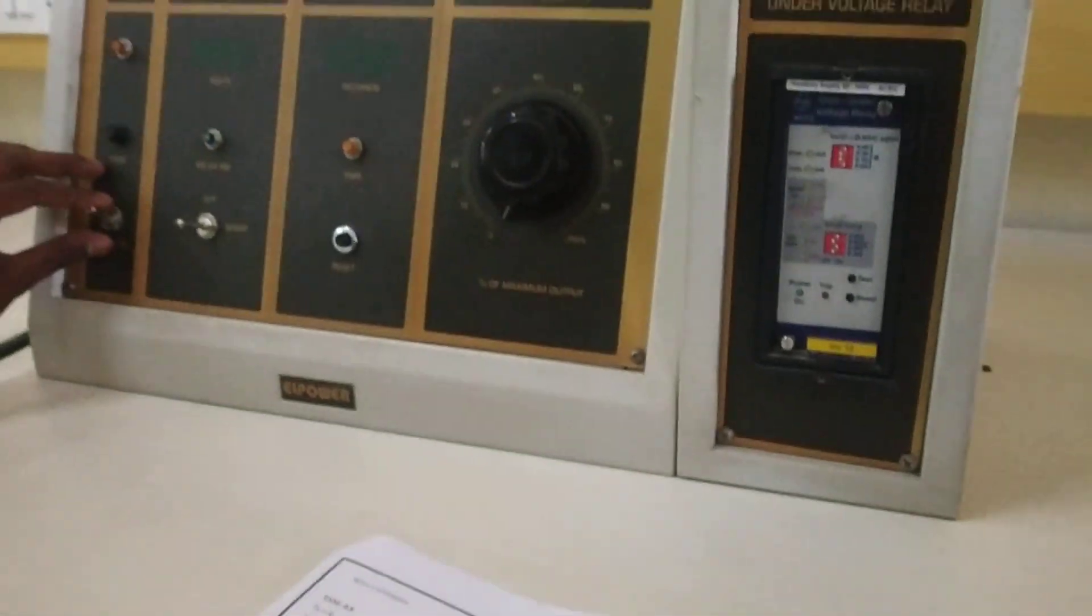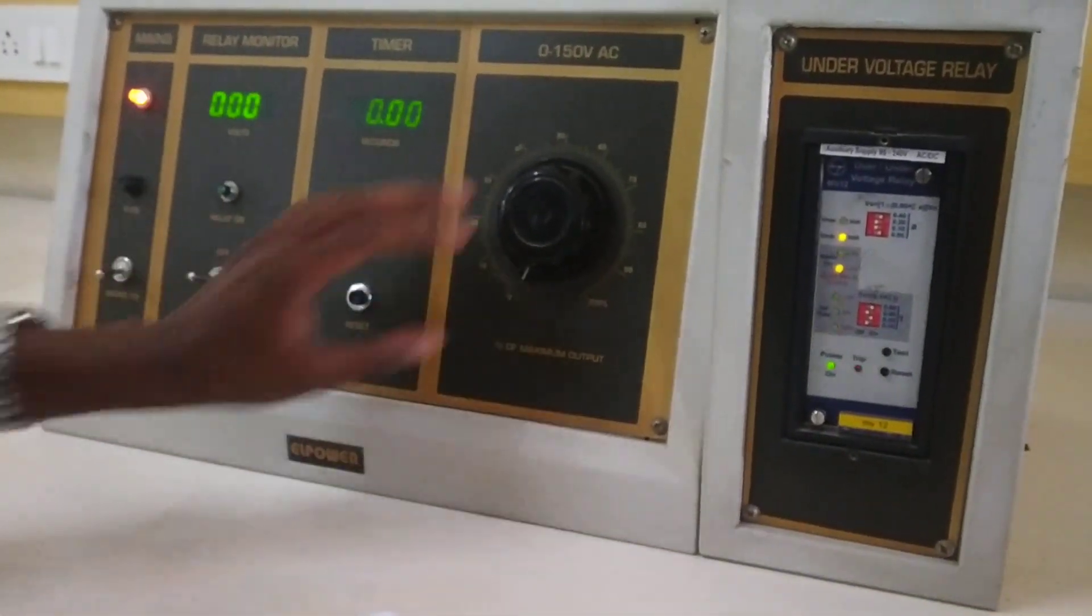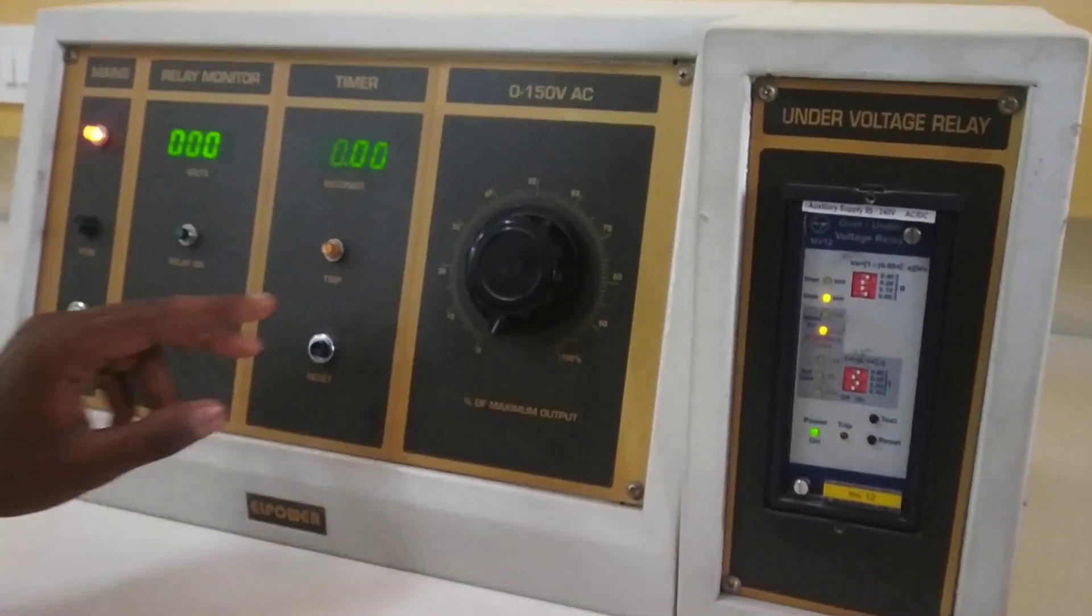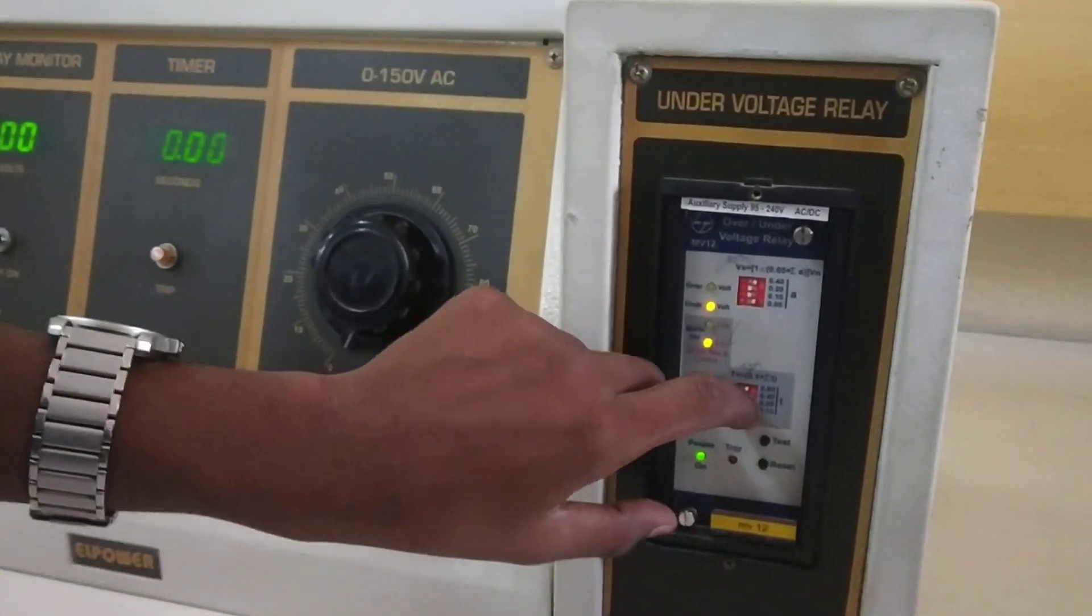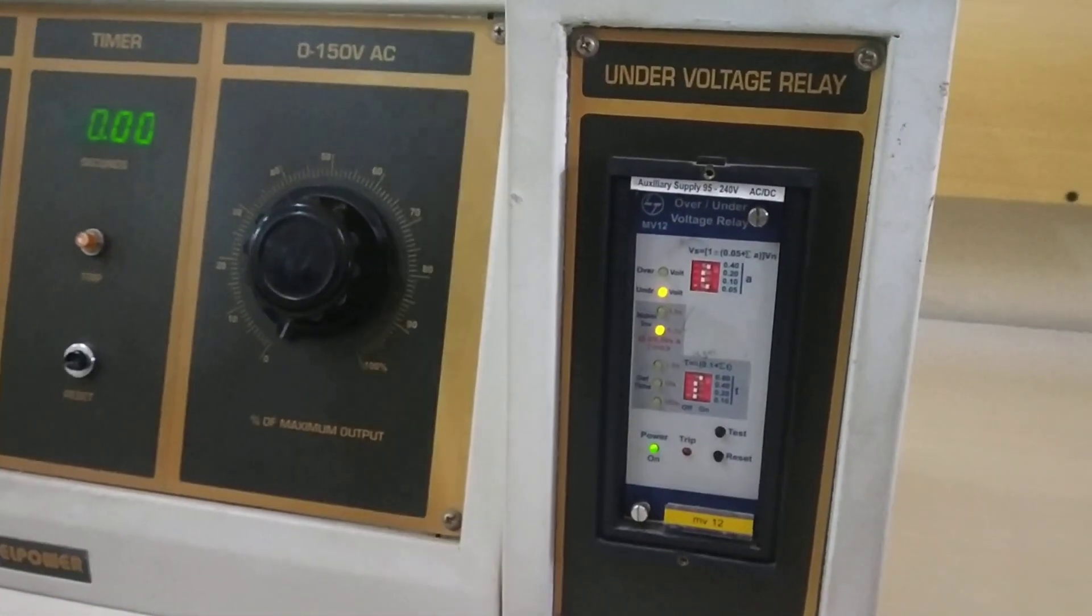First, you should turn on the mains. Make sure that all are 0, and make sure that you are set to 0.8 for the first reading.